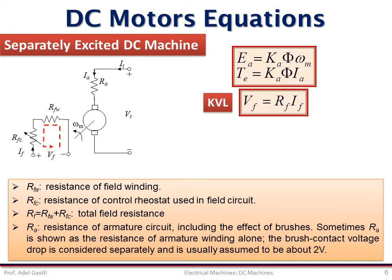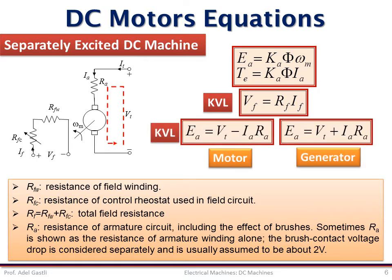Now if you consider the field winding circuit and apply KVL, we can write that VF equals RF IF. While the KVL applied to the armature circuit will result in these two equations, one for the motor and the other one for the generator cases. Note that the only difference between these two is the direction of the armature current. In motoring cases we have minus IA RA and in generator cases we have plus IA RA.